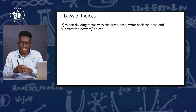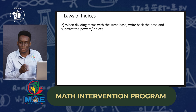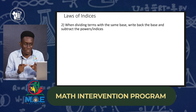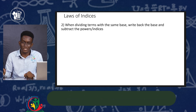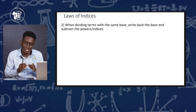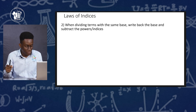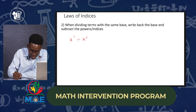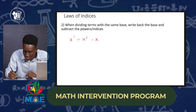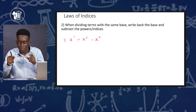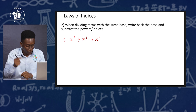Now let's look at the second law. The second law is going in the opposite direction to the first one: when dividing terms with the same base, write back the base and subtract the powers. Just now when we were multiplying we added the indices; now when dividing with the same bases, we subtract. First example: x to the seventh divided by x to the third. The bases are the same — write back the base and 7 minus 3 gives us 4. So x⁷ ÷ x³ gives us x⁴.